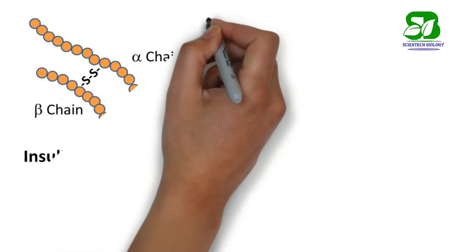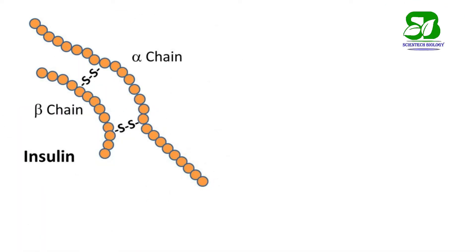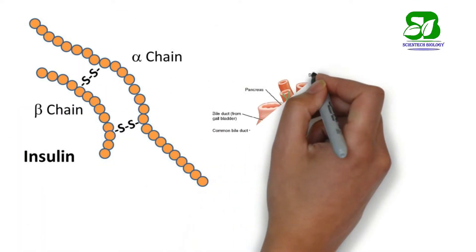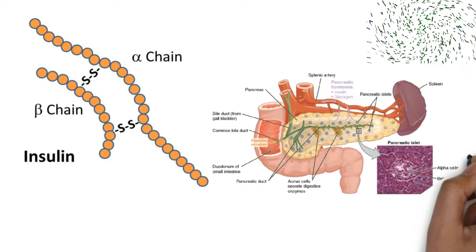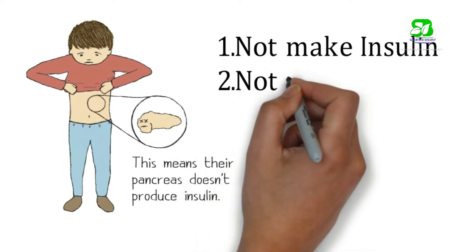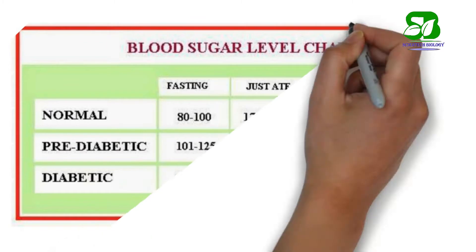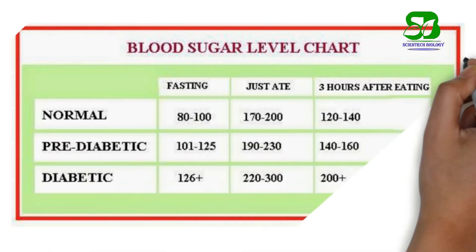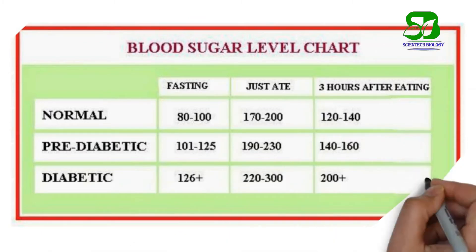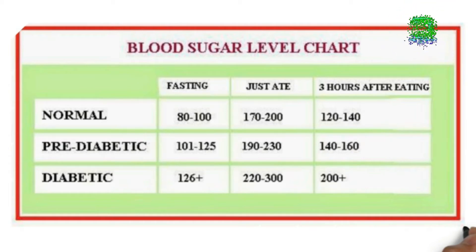Insulin, a hormone made by the pancreas, helps glucose from food to get into your cells. Sometimes your body doesn't make enough insulin or doesn't use any insulin. When your blood glucose sugar level is more than 126 in fasting condition and 200 after 2 hours of a meal, it means you have diabetes.